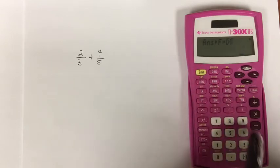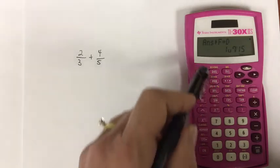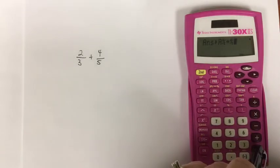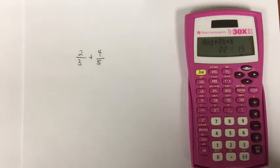But I can convert that to fraction form by using the F to D function. Second F to D equals, there is the answer in mixed number form, and then I can convert that to improper fraction form using the second function on the fraction key, and so we see that the final result here is 22 over 15.